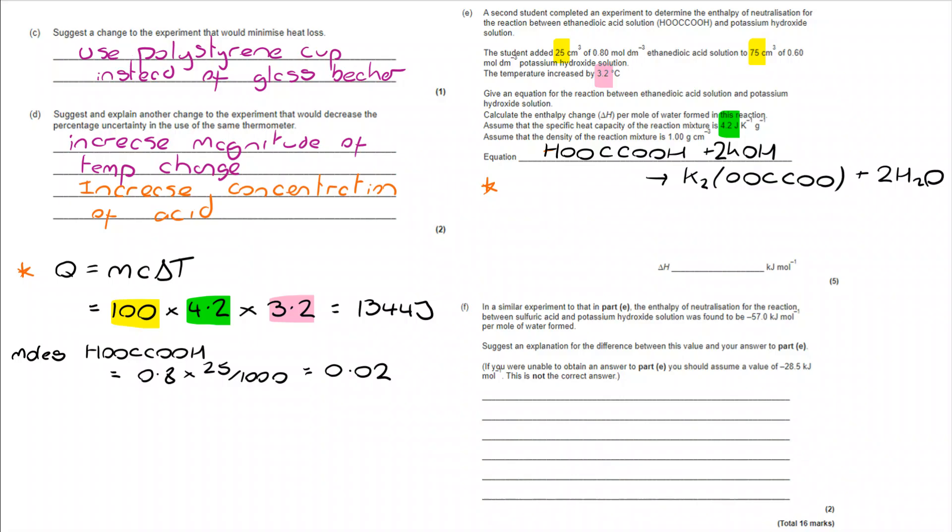Let's do the same with KOH. I have got 0.6 mole dm to the minus 3, 75 centimetres cubed converted to decimetres cubed. That means we've got 0.045 moles of KOH. That means that it's in excess. We've actually used 0.04 moles of KOH. Bear in mind, this relies on you knowing it's a 1 to 2 mole ratio.